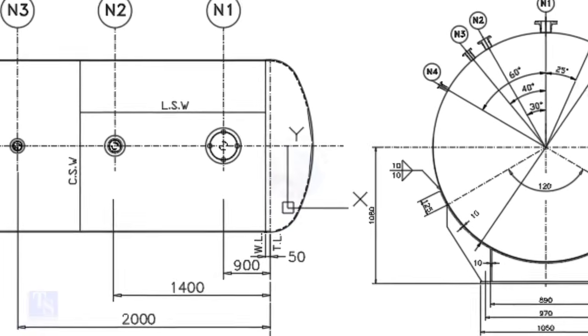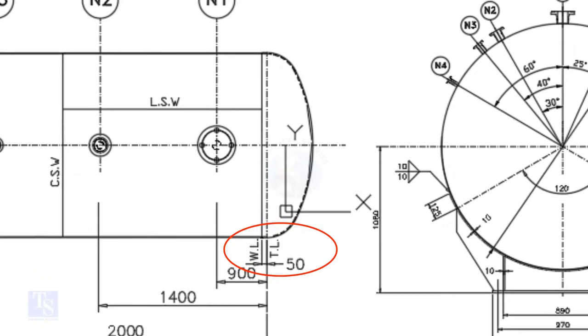What is TL and WL? TL stands for tan line and WL stands for weld line. The surface between the TL and WL is called SF, or straight face. Here, the straight face is 50 millimeters.